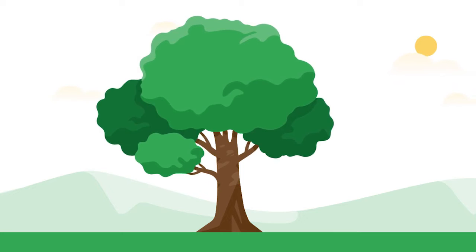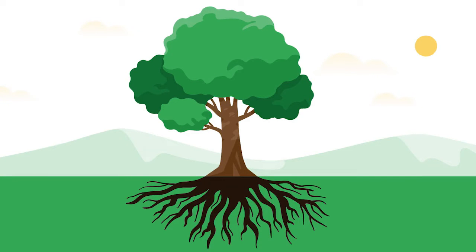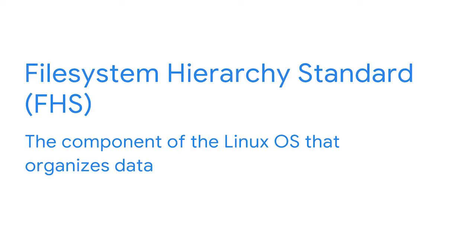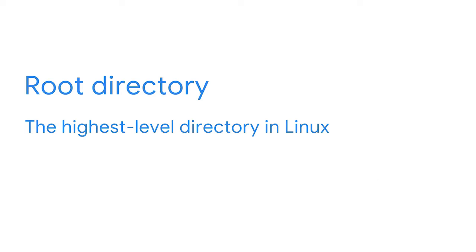As we continue our journey into utilizing the Linux command line, we'll focus on how to navigate the Linux file system. I want you to imagine a tree — what did you notice first? Would you say the trunk or the branches? Everything about a tree starts in the roots. Something similar happens when we think about the Linux file system. The file system hierarchy standard, or FHS, is the component of the Linux OS that organizes data. Everything we do in Linux is considered a file somewhere in the system's directory. The FHS is a hierarchical system — just like with the tree, everything grows and branches out from the root.